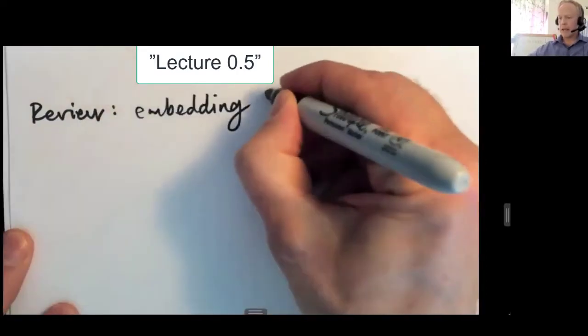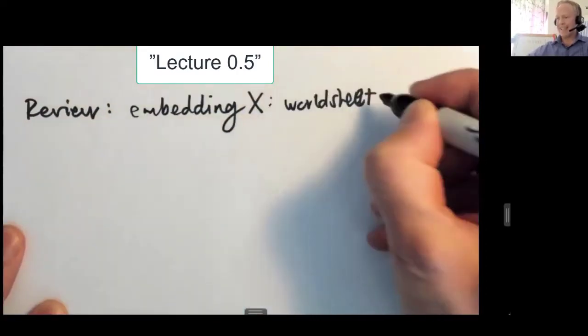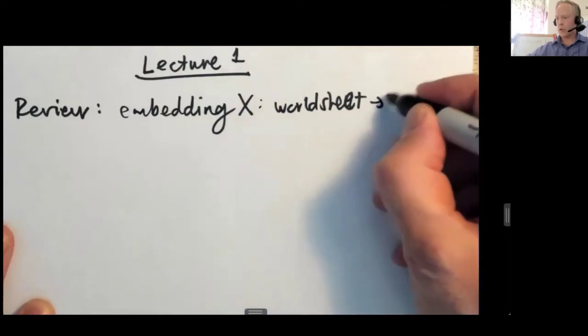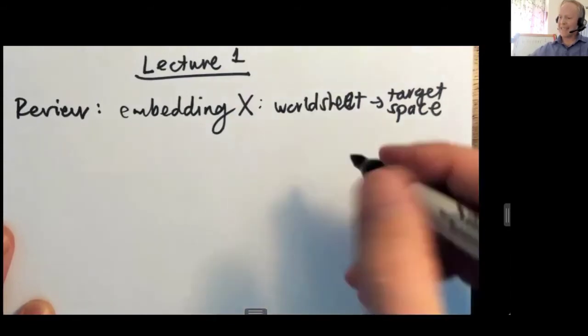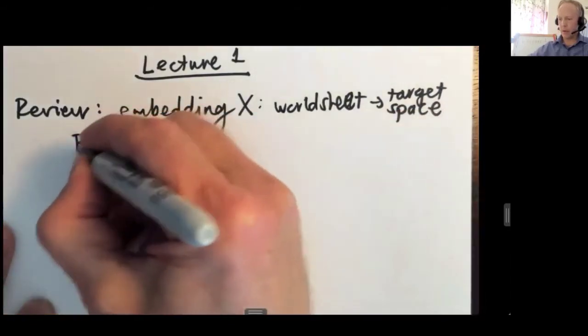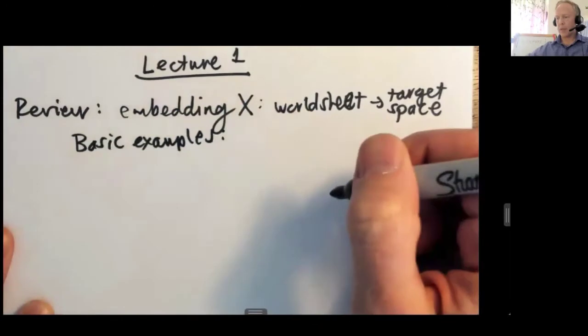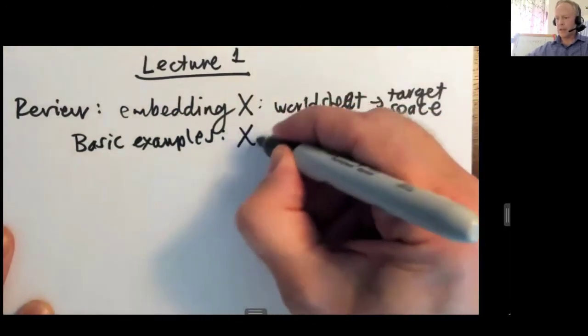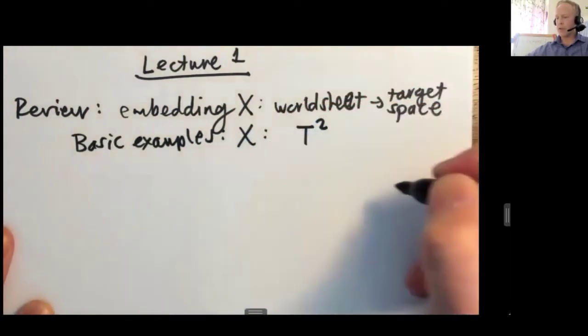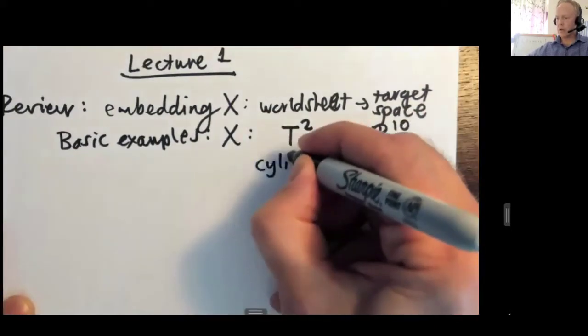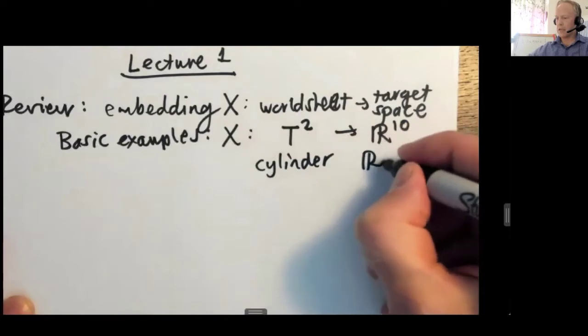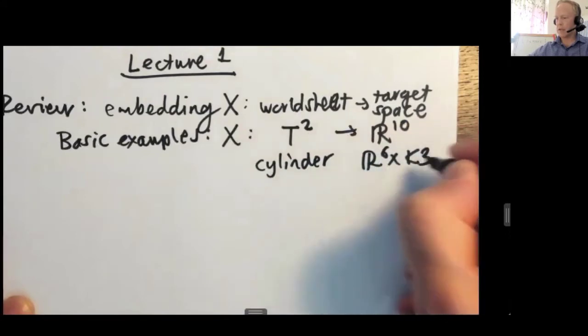Let me do a quick review. x is called embedding. It goes from the worksheet to target space that you can think of as space-time. In basic examples, it will not be terribly phenomenological. It will be x mapped from, for example, the torus to 10-dimensional flat space. It could be a cylinder, or this could be, as we said, R6 times K3 or something like that.